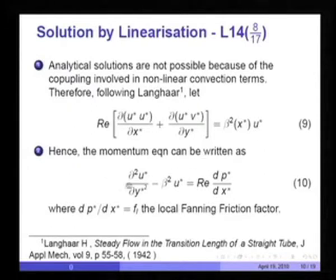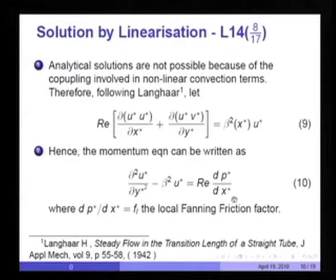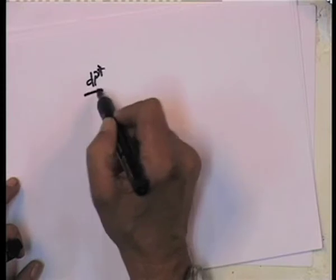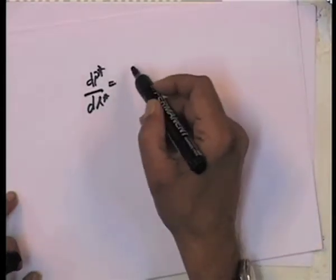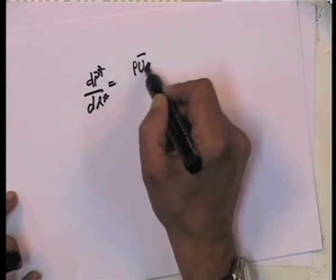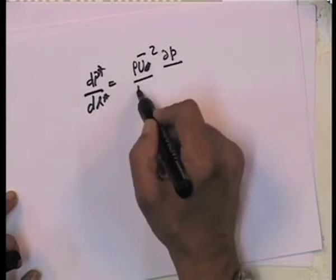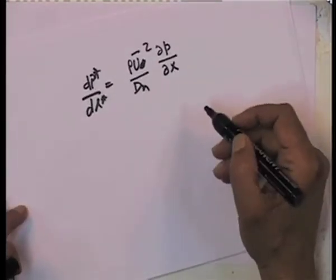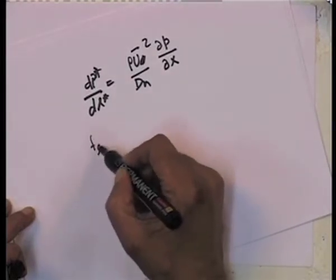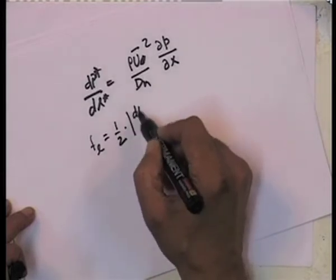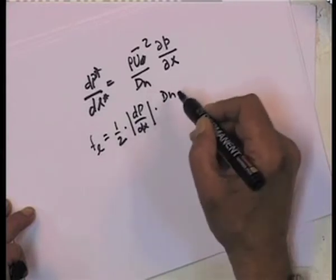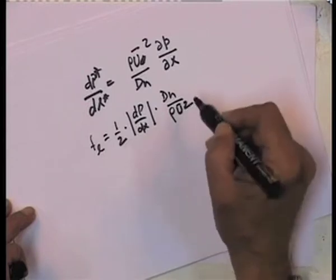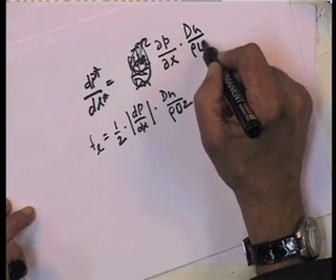β² is a constant at one cross section — its value changes from cross section to cross section, but at a given cross section β² is constant. Substituting β²u* for the left-hand side, the momentum equation becomes: d²u*/dy*² − β²u* = Re · dp*/dx*. The local friction factor F_L is defined as (−1/2)(dp/dx)(d_h)/(ρ u-bar²), so dp*/dx* equals 2F_L.